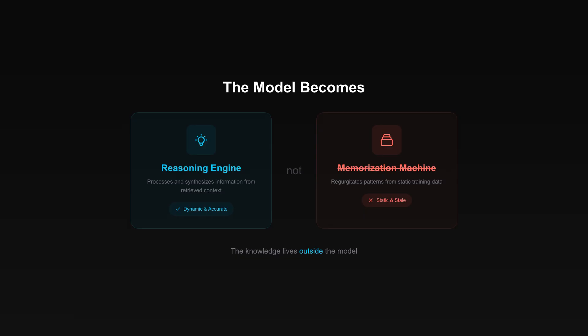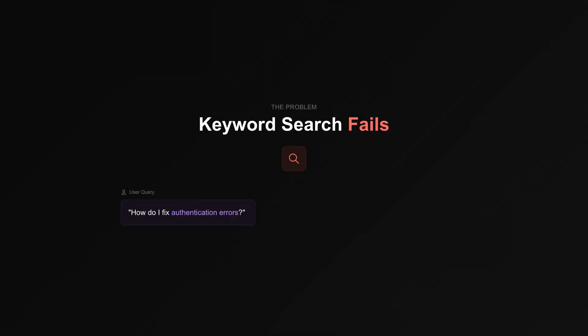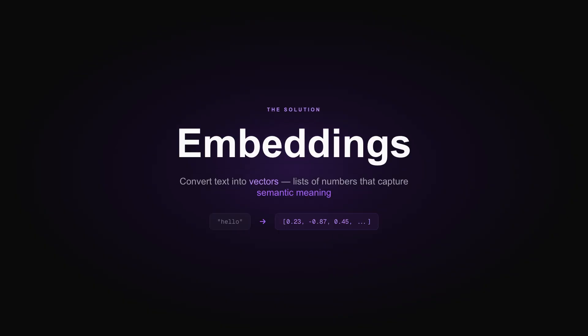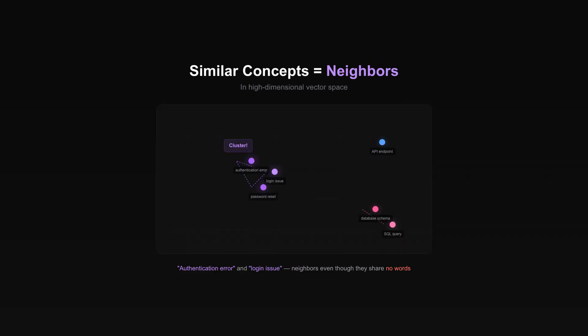The knowledge lives outside the model. But how do you find relevant documents? Keyword search fails. If the user asks how do I fix authentication errors, and your docs say resolving login issues, keyword matching misses it entirely — same meaning, different words. Enter embeddings. You convert text into vectors, lists of numbers that capture semantic meaning. Similar concepts land close together in vector space. Authentication error and login issue become neighbors, even though they share no words.